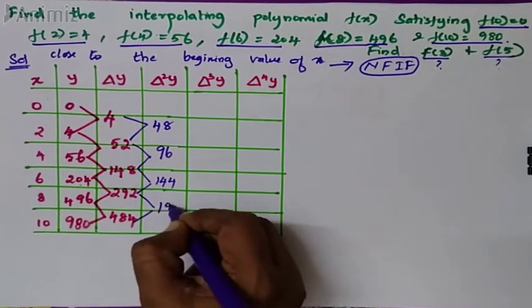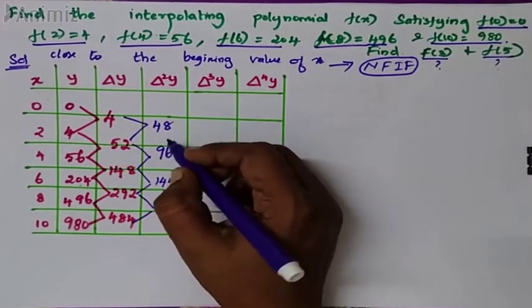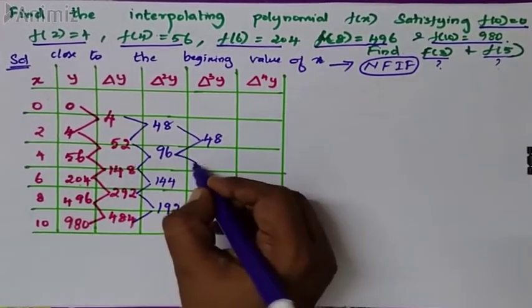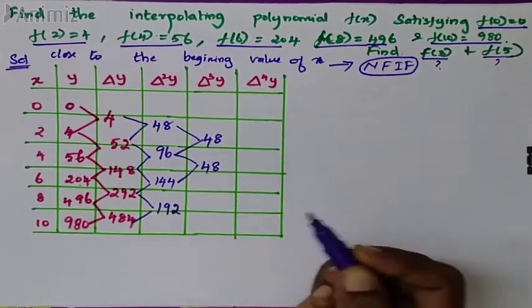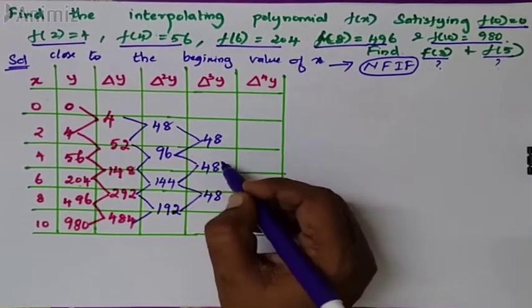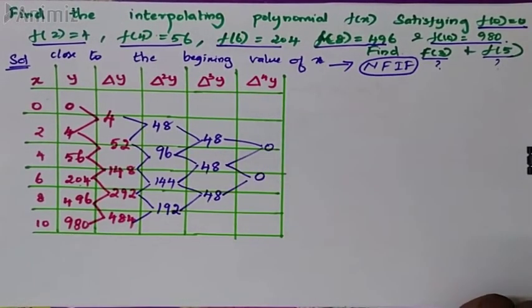This is 192. Third difference is 48, this is 48. Fourth difference is 0, this is 0.